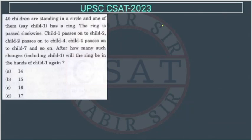Now, let us do this question. 40 children are standing in a circle and one of them has a ring. The ring is passed clockwise. Child 1 passes onto child 2, child 2 passes onto child 4, and child 4 passes onto child 7 and so on. After how many such changes will the ring be in the hand of child 1 again?